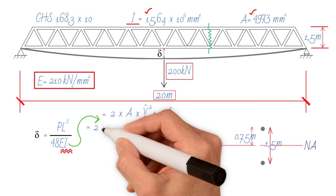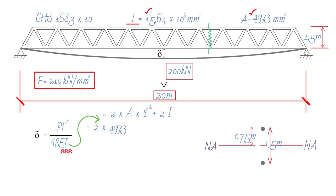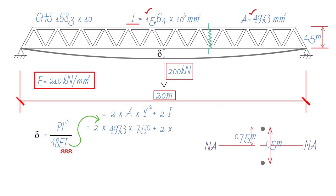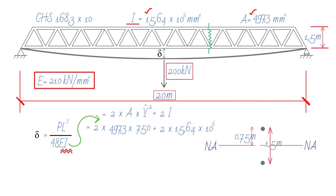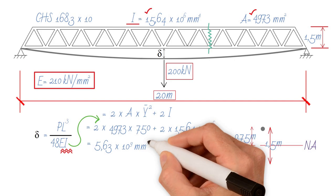Therefore, I equals 2 times 4973 millimeters squared times Y bar, where Y bar we had in meters, so convert that to millimeters, plus 2 times I local, 15.64 times 10 to the 6 millimeters to the 4. This gives us a value of 5.63 times 10 to the 9 millimeters to the 4.